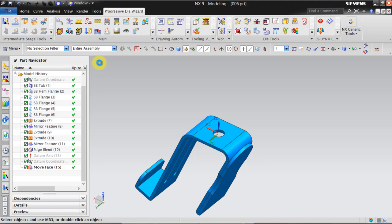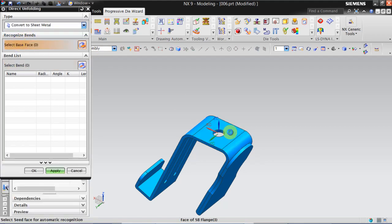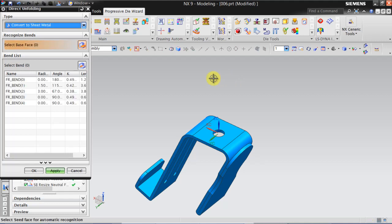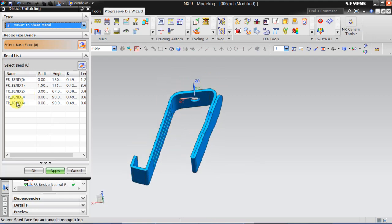Convert this to a sheet metal. Select the face and click apply. And these are the bends identified by UG.